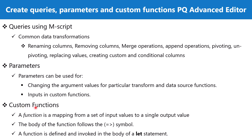Lastly, we have custom functions in Power Query. In the Power Query M formula language, a function is a mapping from a set of input values to a single output value, created from the native M functions and operators. A function is written by first naming the function parameters and then providing an expression to compute the result. The body of the function follows the arrow symbol, and a function is defined and invoked in the body of a let statement.